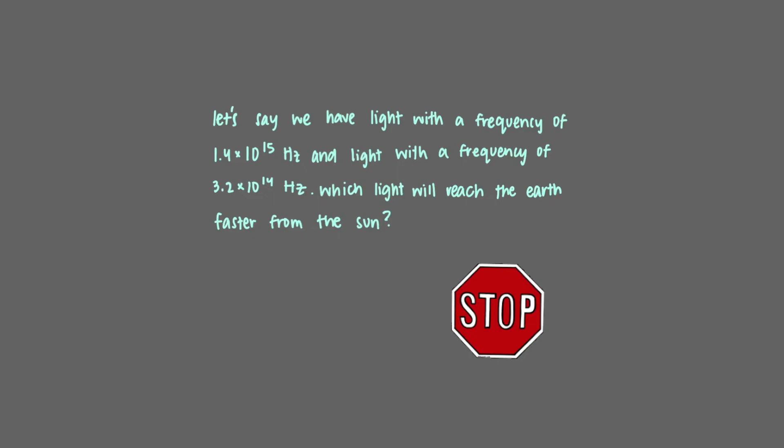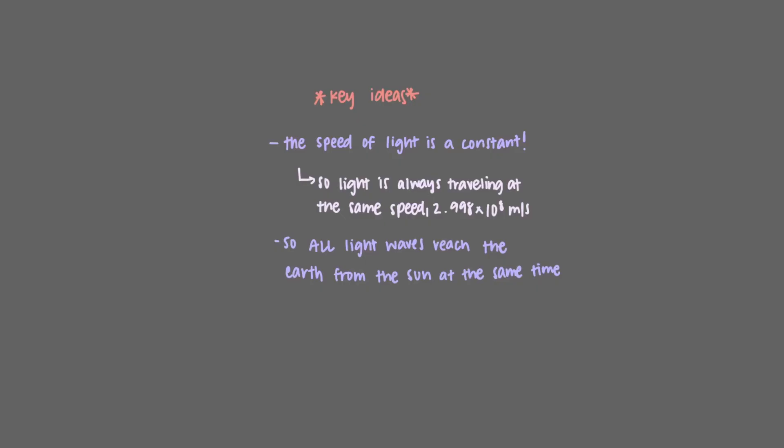Let's say we have light with a frequency of 1.4 times 10 to the 15 hertz and light with a frequency of 3.2 times 10 to the 14 hertz. Which light will reach the earth faster from the sun? Remember that the speed of light is a constant, so light is always traveling at the same speed, 2.998 times 10 to the 8 meters per second. Therefore, both light waves reach the earth from the sun at the same time.